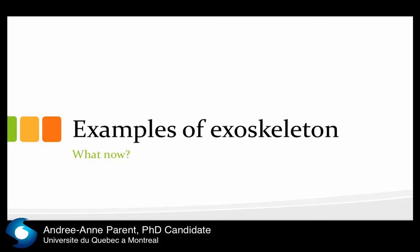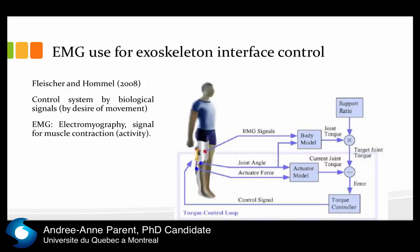Now, there are many examples of real exoskeletons. I will explain the biology side more since that is my background. The most commonly used interface is EMG — electromyography — used for exoskeleton interface control. If you have a spinal cord injury, depending on the level, if you can send a signal you can capture those signals. Fisher and Almel explain this kind of interface control: it's a control system driven by biological signals — the EMG signal representing the desire of movement.